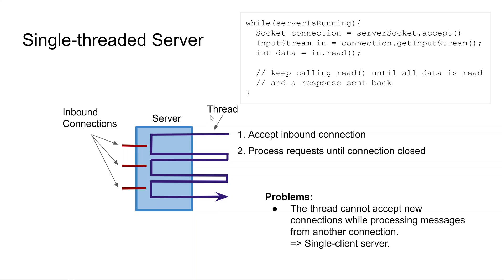This means the single thread executing the server is blocked both while calling accept and while reading from the input stream — and also while writing data back through the output stream. The consequence is that while the thread is blocked in a read call for one connection, it is unable to accept other new inbound connections. This design can only handle a single client connected to the server at a time, which is not a scalable single-threaded design.